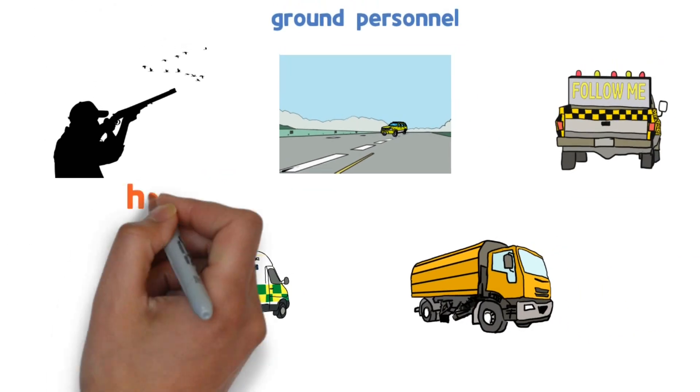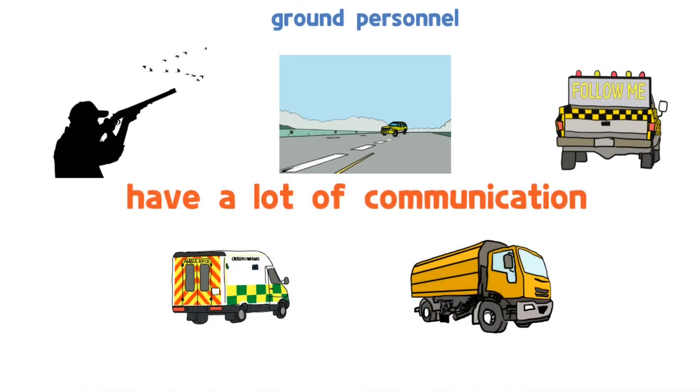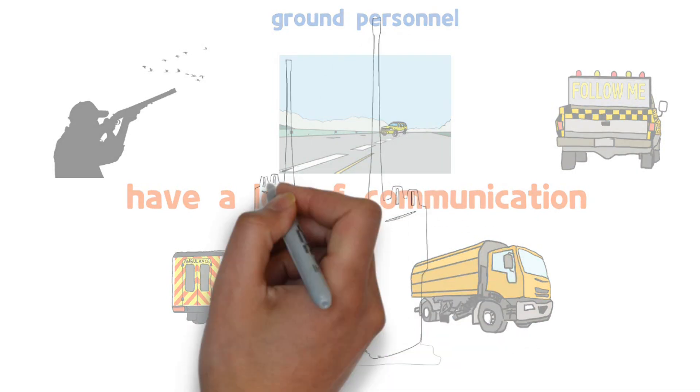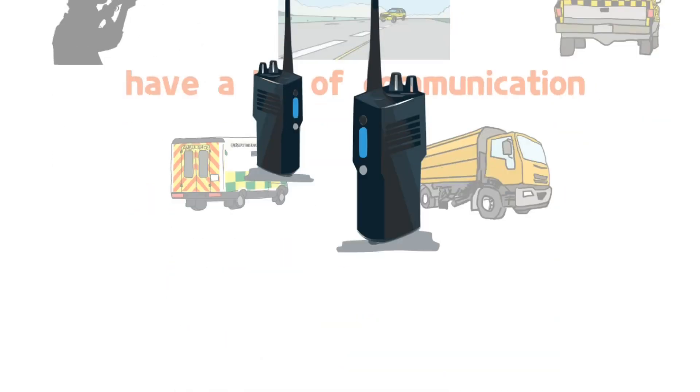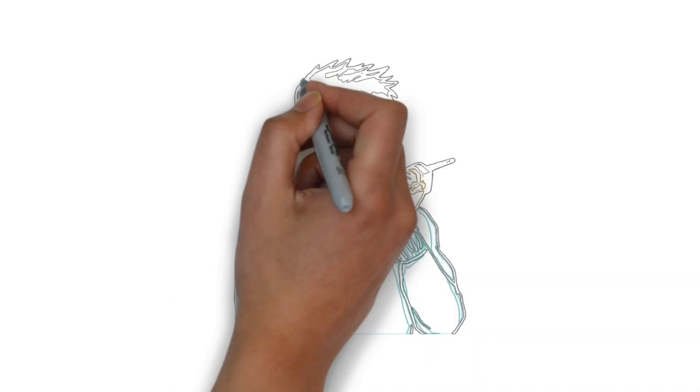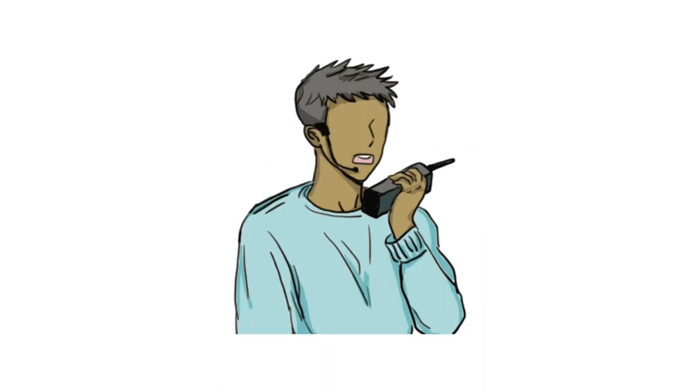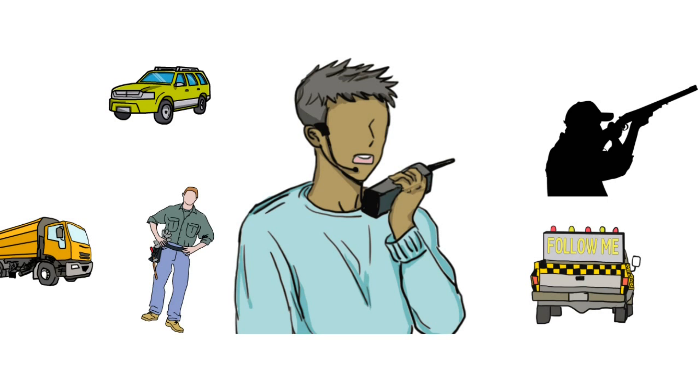Tower controllers communicate more than a dozen times a day with ground personnel. There are also several walkie-talkies for contacting all of them. In other words, the tower controller communicates frequently with many ground vehicles and personnel.